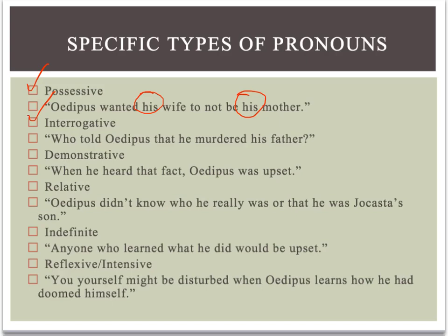Interrogative pronouns are pronouns that ask questions. The antecedent of an interrogative pronoun is going to be sometimes difficult to determine because it's standing in for a word that we don't necessarily know. It's a question word — who, where, when, why, how. In this sentence: who told Oedipus that he murdered his father? There's one interrogative pronoun — it's the pronoun who. The antecedent of who is the identity of the person who told Oedipus that he murdered his father. That's a complicated question to answer even when you've read the play. The answer would be something like Jocasta told Oedipus that he murdered his father, but that's not entirely accurate. It's a complicated story.